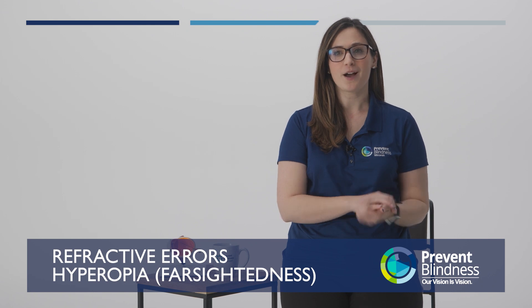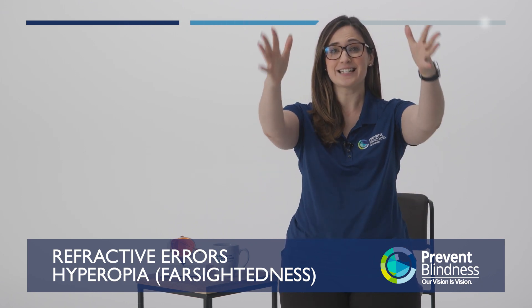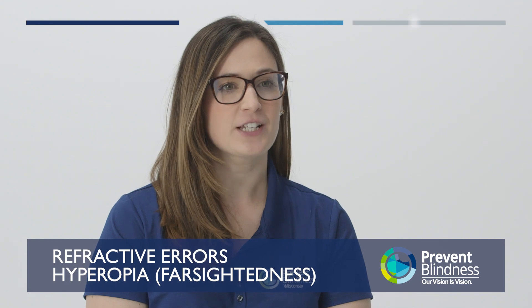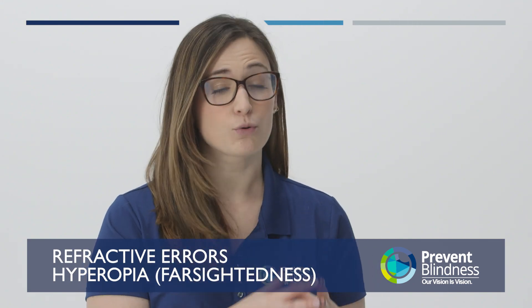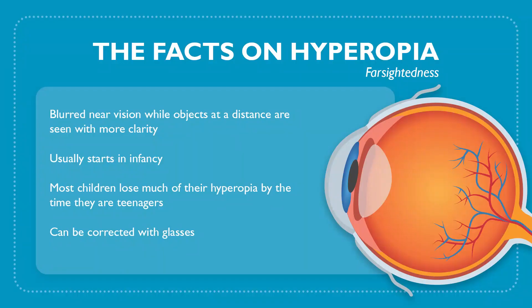Next, we have hyperopia, or farsightedness. With farsightedness, the objects in the distance are clear and what's up close is blurry. In this image, we can see that our little boy on the swing is blurry, but the girl in the background is very clear. With hyperopia, this condition usually starts in infancy and a lot of children can actually outgrow their hyperopia by the time they're teenagers. Of course, to correct hyperopia, we will wear a pair of glasses or perhaps contacts.